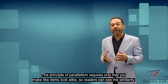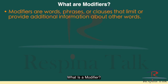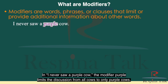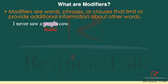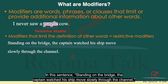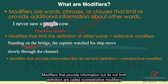What is a modifier? Modifiers are words, phrases, or clauses that limit or provide additional information about other words. In "I never saw a purple cow," the modifier "purple" limits the discussion from all cows to only purple cows — this is a restrictive modifier. In "Standing on the bridge, the captain watched his ship move slowly through the channel," the modifier "standing on the bridge" provides additional information about the captain but does not limit the definition — this is a non-restrictive modifier.